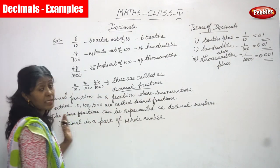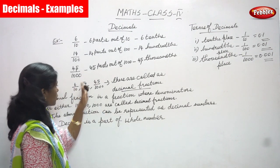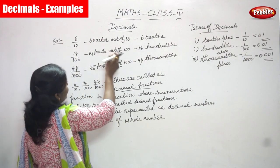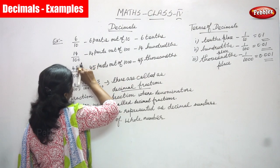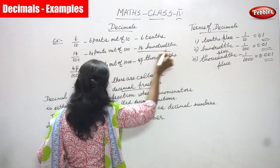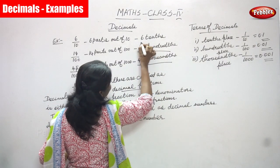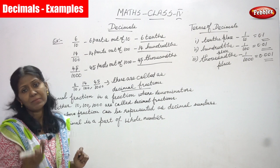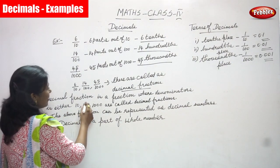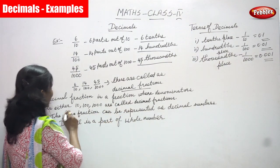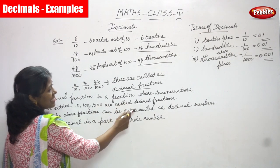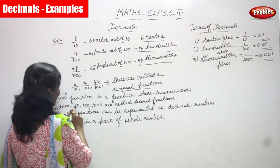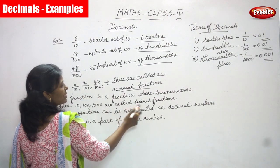These are called decimal fractions. Basically these are all in fraction method, but why we call them decimal fractions — because we convert 6 by 10 as 6 tens, 14 by 100 as 14 hundreds, and 45 by 1000 as 45 thousands. So decimal fraction is a fraction where the denominator is either 10, 100, or 1000 — those are called decimal fractions.